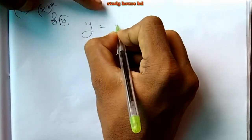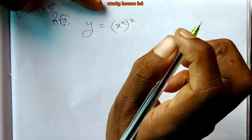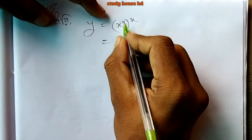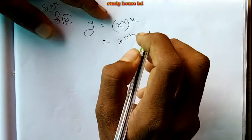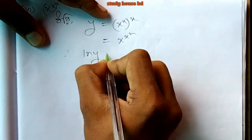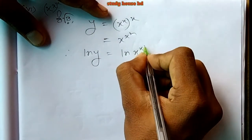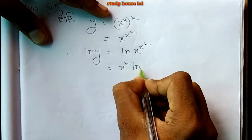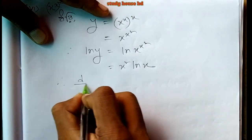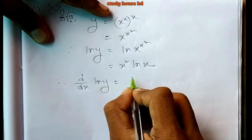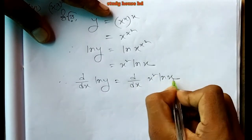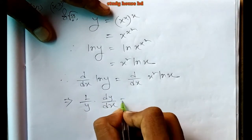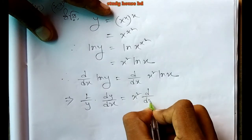Now for another problem: y equals x to the power x. This follows the same approach as before. Now consider d/dx of x squared times log x, using the product rule: d/dx of u times v equals u times d/dx v plus v times d/dx u.